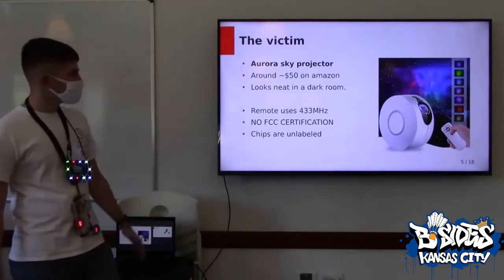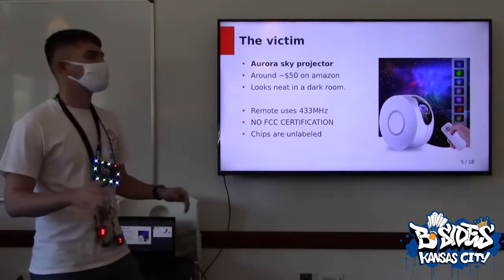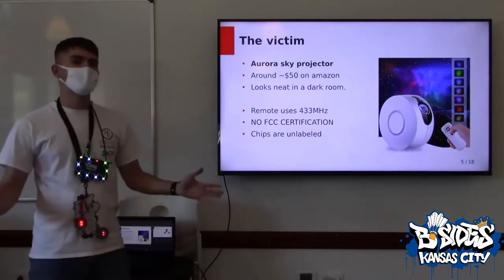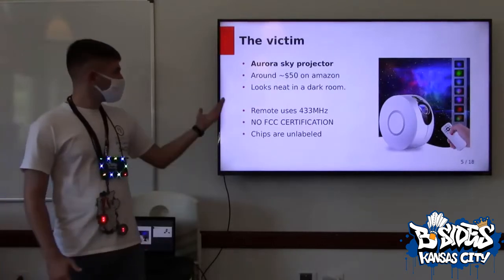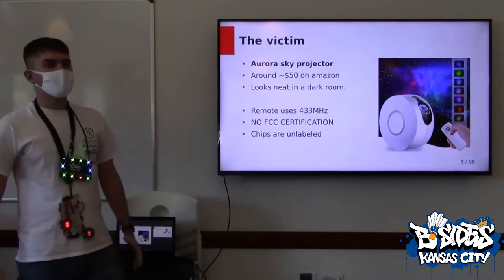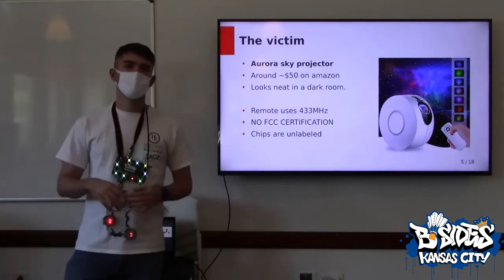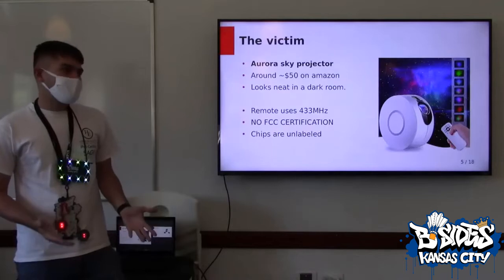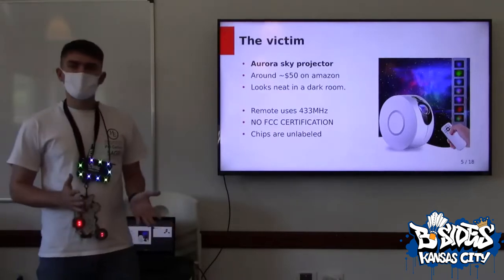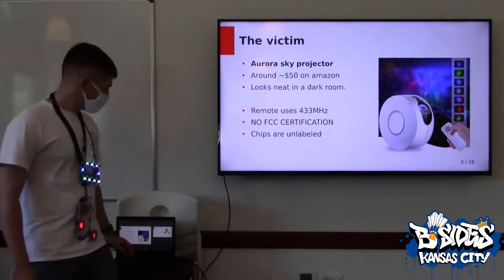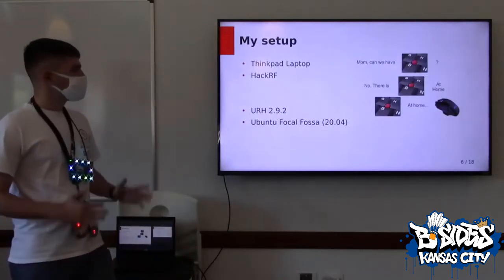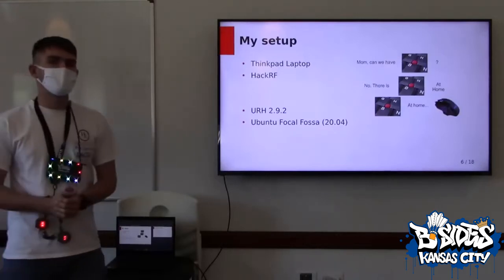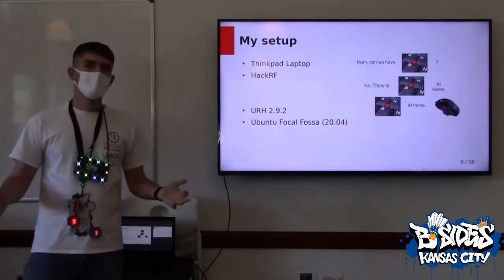Here is what I'm planning to do. I'm going to take that sky projector there that has lasers and cool light effects — I actually found it at one of those Amazon liquidation places. They go about 50 bucks on Amazon. It runs on 433 MHz, and I opened it up. There were basically unlabeled chips and I couldn't find any FCC listings, which — it's ISM Part 15 but I believe it has to have FCC listings, so I couldn't look up the board. For my setup, I've got a ThinkPad, a HackerRF, and Universal Radio Hacker 2.9 — so if you're watching this in the future, it might be a little different.